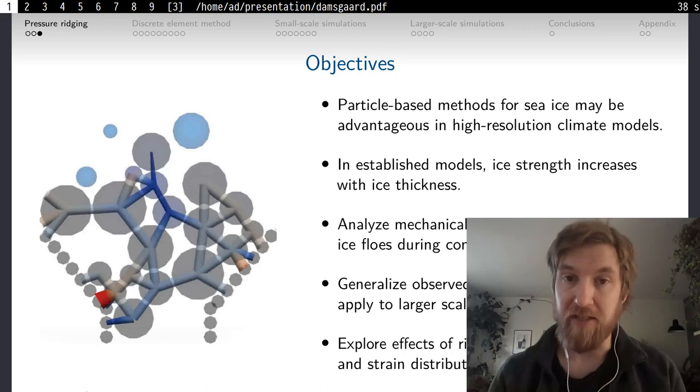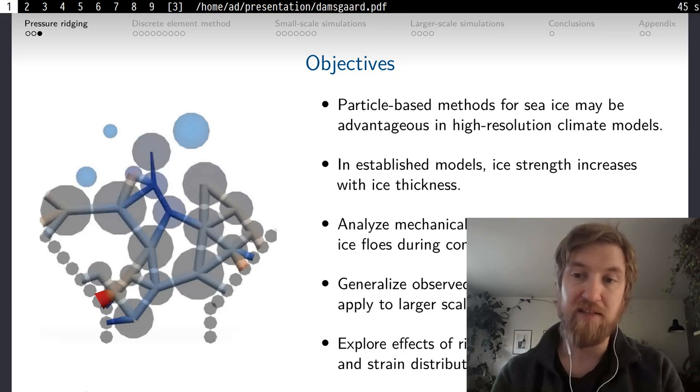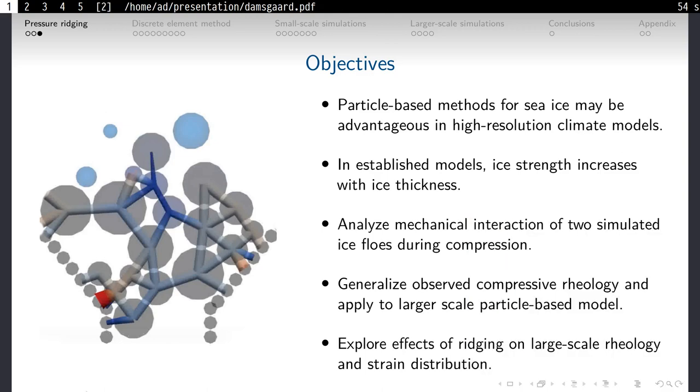With regards to ridging, there are many established models based on the idea that the strength of ice increases with the thickness of ice. That is something we want to test in this study. In order to do that, we analyze the mechanical interaction of two simulated ice flows during compression. We take the observed behavior during this compression experiment and generalize it into a simple set of equations that we can put into a larger scale particle-based sea ice model. We use this ridging model to explore the effects on the bulk rheology and the strain distribution.